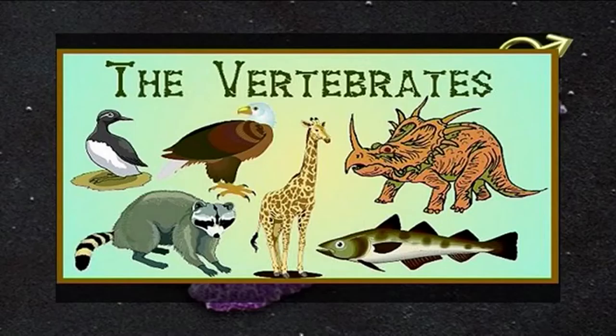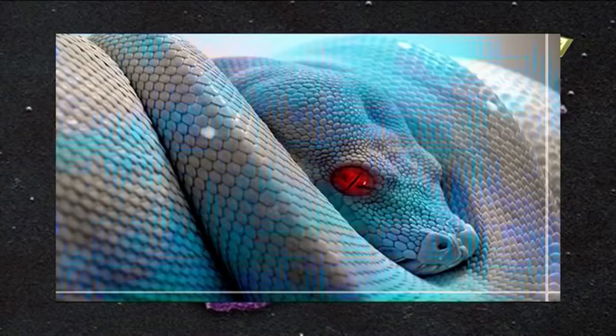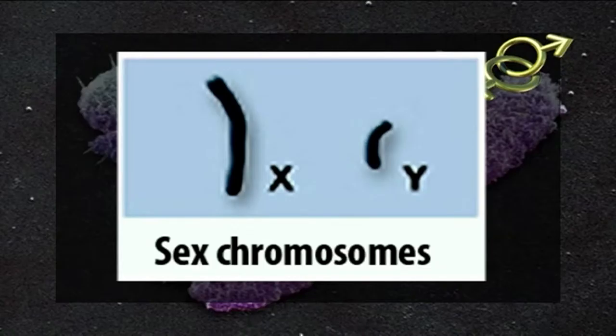In other vertebrates and certain invertebrates, the female is heterogametic and the male homogametic — for example, in birds and reptiles it is the female that has the heterozygous ZW pair of chromosomes. In some animals, the sex chromosomes cannot be distinguished from the others; in such cases the sex-determining genes are confined to a region in a pair of chromosomes. The X and Y chromosomes in humans are also very different in appearance, with the X chromosome being considerably larger than the Y.